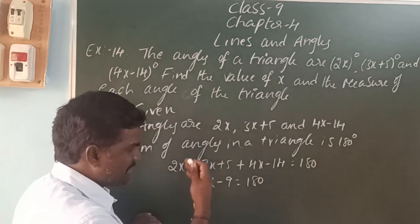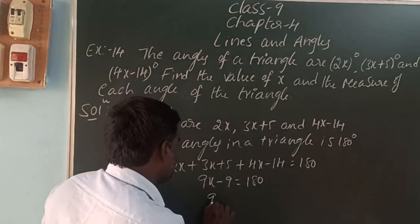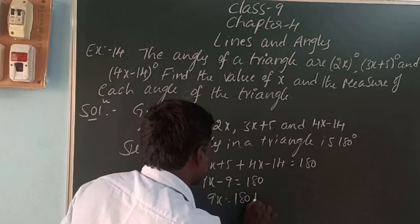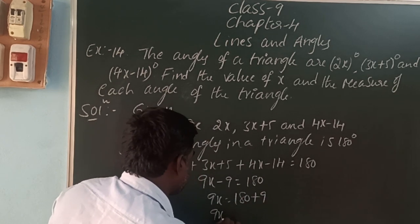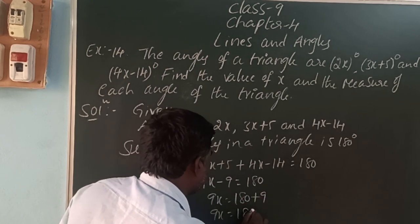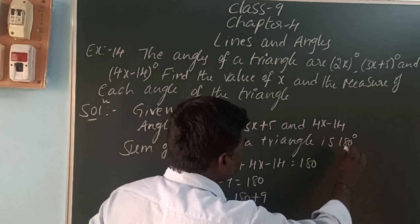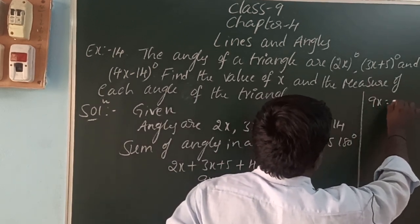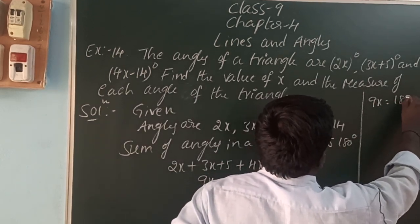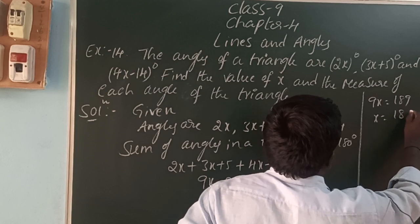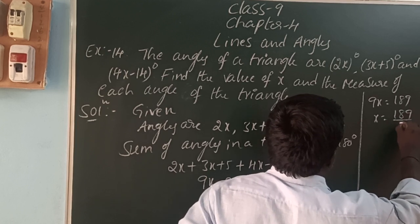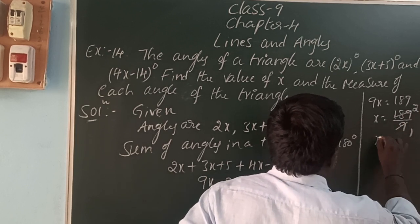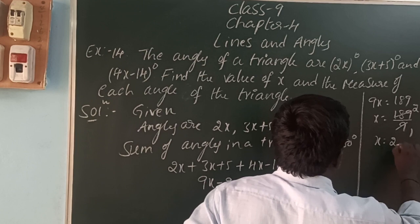Minus 9 moves to the right side as plus 9. So, 9x is equal to 180 plus 9, which is 189. Dividing both sides by 9, x is equal to 21.